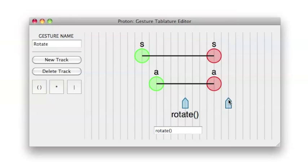Lastly, the developer associates the completion of the gesture with the end rotate callback. Proton will then convert the tablature to a regular expression for gesture matching.